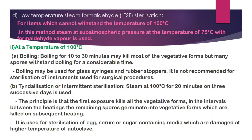Tyndallization, or intermittent sterilization, uses steam at 100°C for 20 minutes on three successive days. The principle: the first exposure kills all vegetative forms; in the intervals between heatings, remaining spores germinate into vegetative forms, which are then killed on subsequent heating. It is used for sterilization of egg- or sugar-containing media damaged at autoclave temperatures.